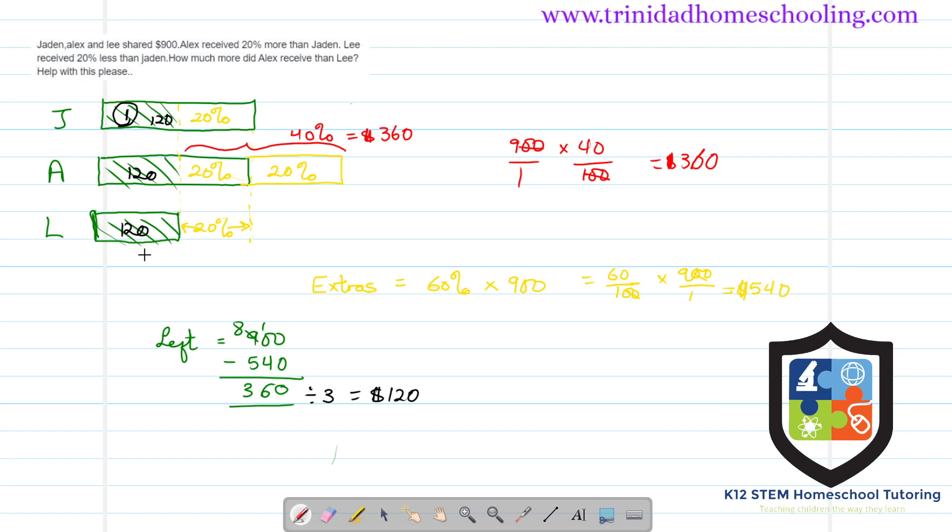So let's add back everybody's. Jayden had 120 and 20%. Now if 40% is 360, then 20% is equal to half of the 40%, which is 180. So Jayden has 120 plus 180 here, and this will give him $300.